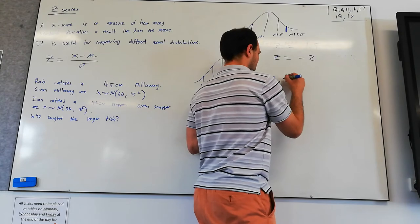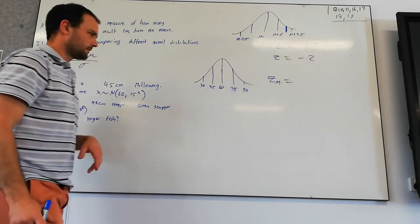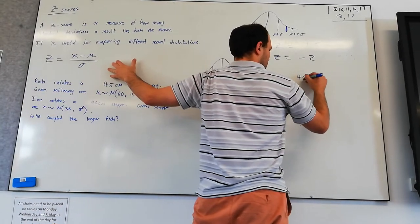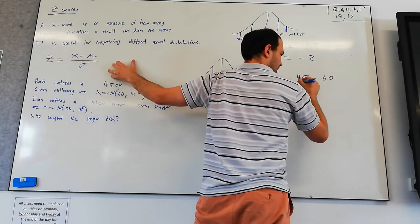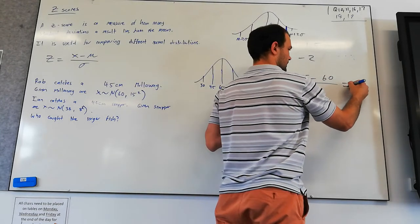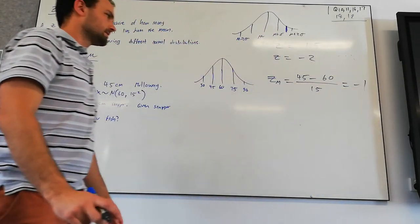The z-score for mulloway is going to be his result. He caught a 45cm mulloway. Take the mean, the mean of mulloway is 60, and then divide it by the standard deviation, which is 15. So we've got the z-score for mulloway is minus 1.